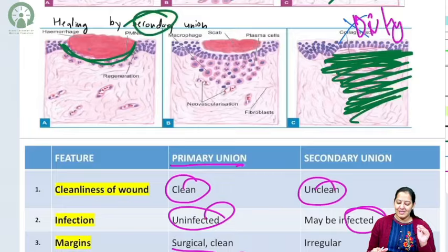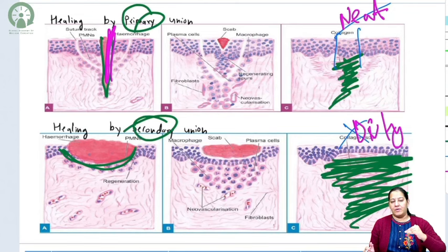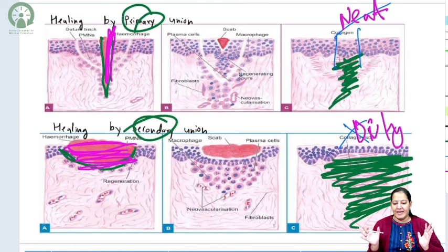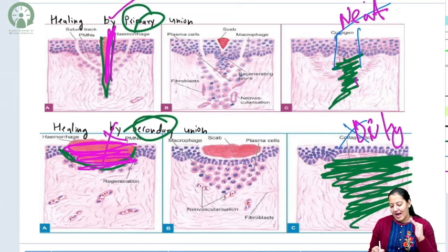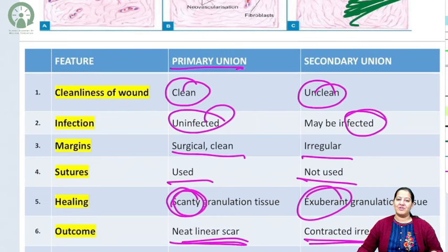So those are the two types of healing: primary union and secondary union. I hope you understood repair, regeneration, and healing. Try solving MCQs on this topic — you will be able to solve all of them. Thank you.